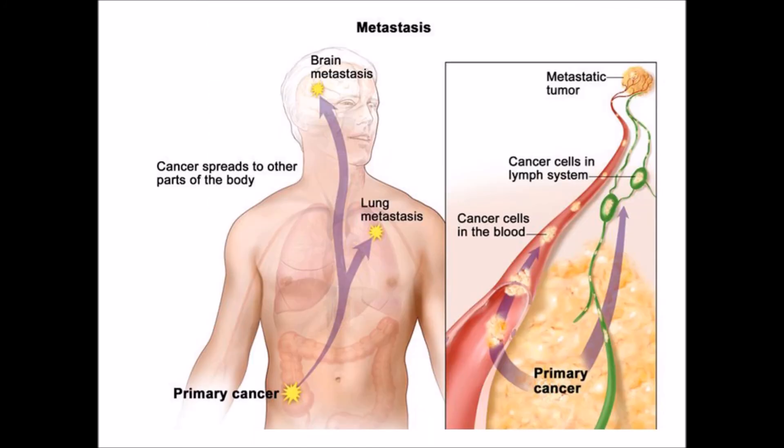Here is an example of metastasis. Cancer started in the large intestine and after some time it entered the blood vessels and spread to other parts of the body like the lung and brain, as shown here.